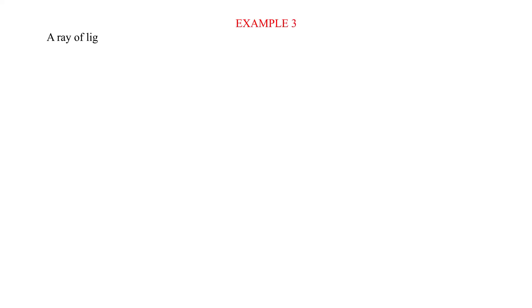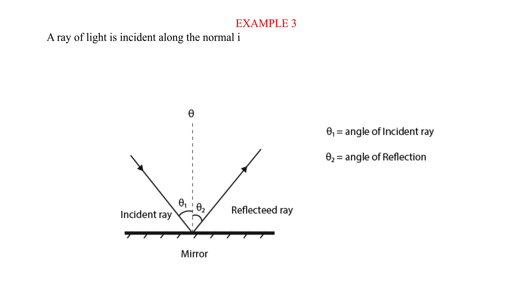Example 3. A ray of light is incident along the normal in a plane mirror. The mirror is then rotated through an angle of 20 degrees. Calculate the angle between the first reflected ray and the second reflected ray.